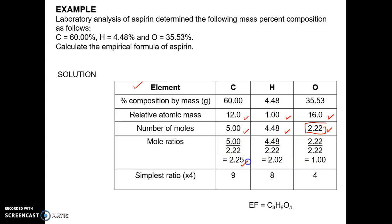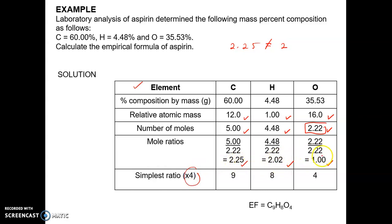We got 2.25, 2.02, and 1. We cannot simply round off 2.25 to 2, because this rounding is not applicable for empirical formula calculations. Since the decimal portion is 0.25, we must multiply all values by 4. Multiplying 2.25 × 4, 2.02 × 4, and 1 × 4 gives the simplest ratio: carbon is 9, hydrogen is 8, and oxygen is 4. So the empirical formula for aspirin is C₉H₈O₄.